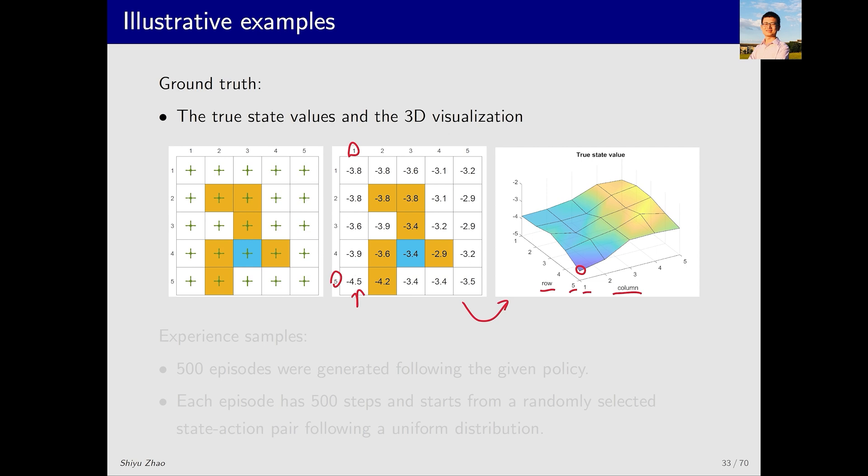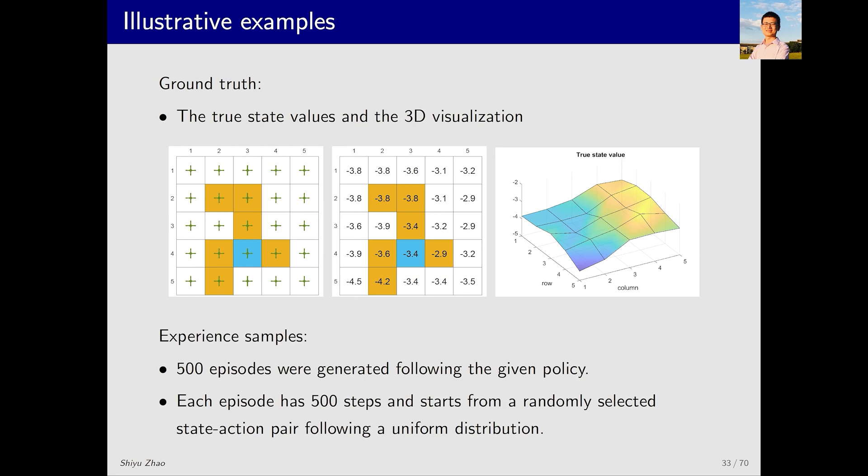So what is the basic idea behind using tdLinear? The idea is to obtain a function, and this function corresponds to a surface. The surface should be as close as possible to this complex surface. This is the fundamental idea. To achieve this goal, we need data. Since we don't have a model, we need data. Here the data consists of 500 episodes, with each episode having 500 steps. The state-action pair at the start of each episode is randomly selected and follows a uniform distribution.